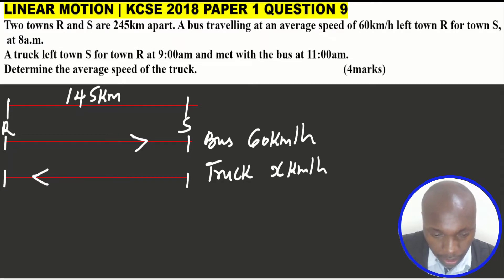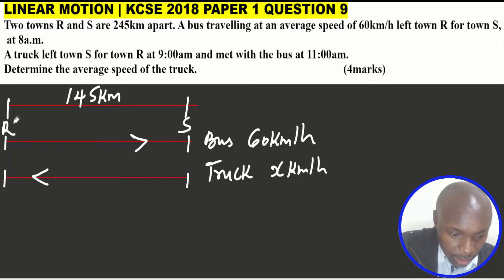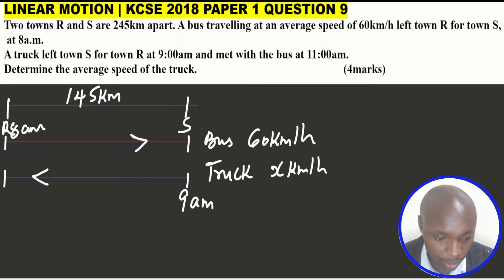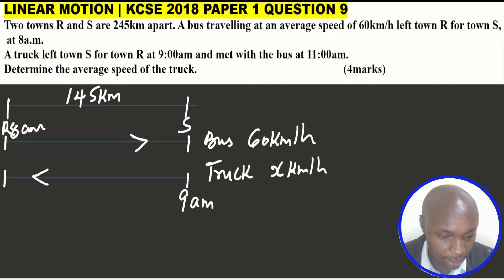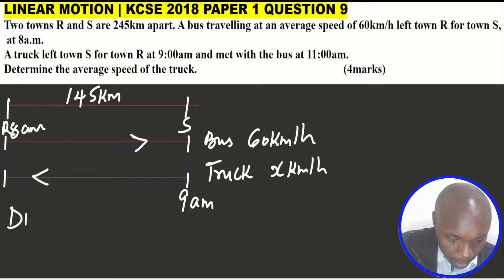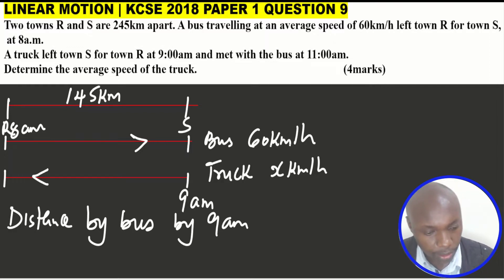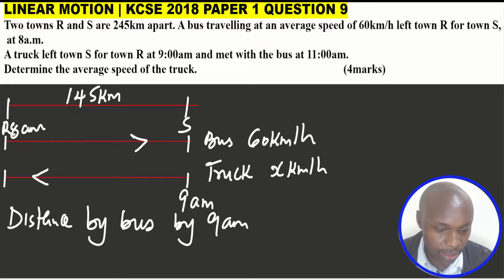Another thing that you are given: the bus started the journey at 8 a.m., then the truck started the journey at 9 a.m. There are two methods of solving this question — I will do both methods. Method one begins by calculating the distance traveled by the bus by the time the truck was beginning the journey.